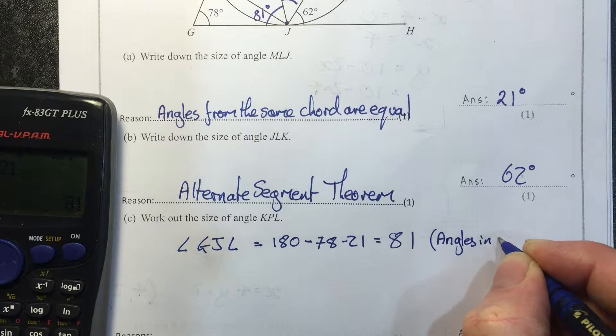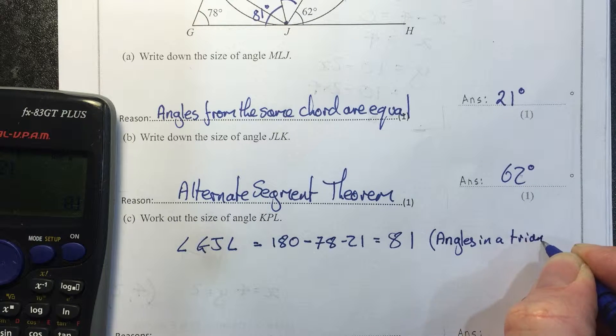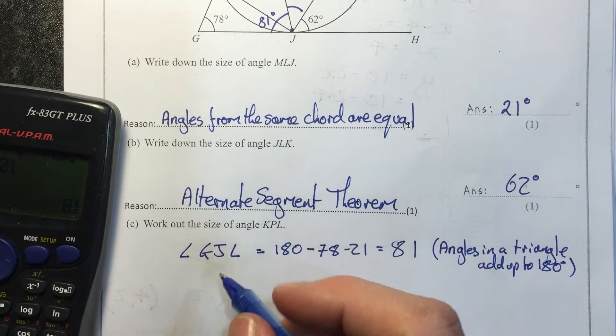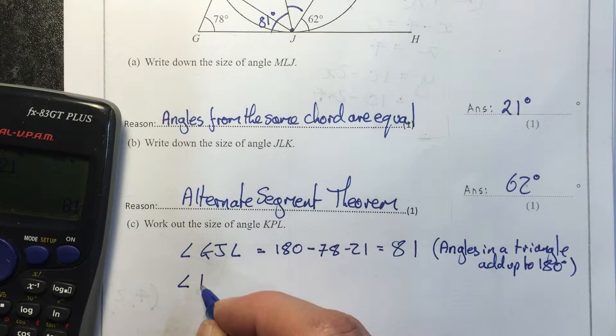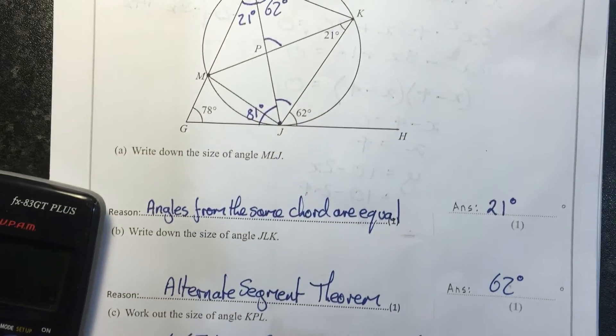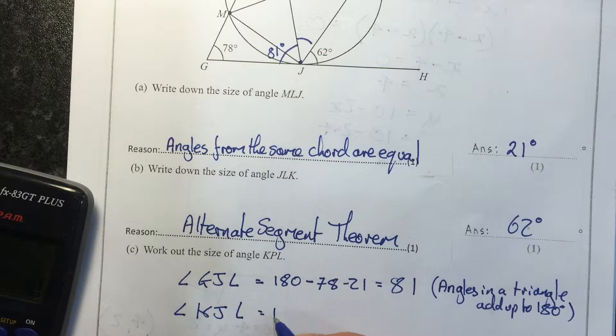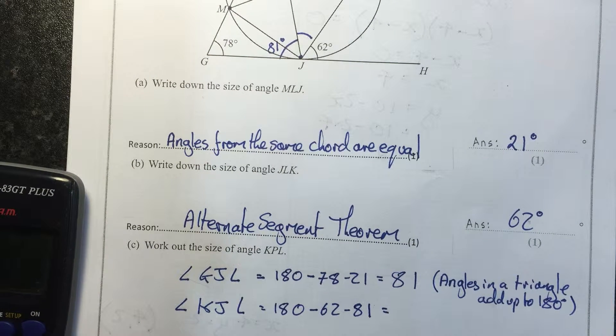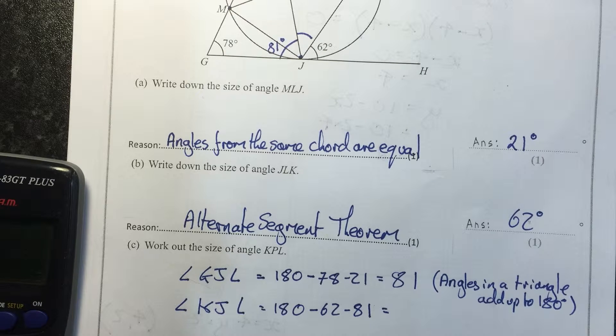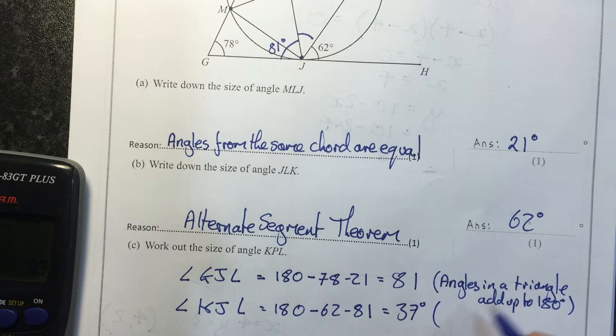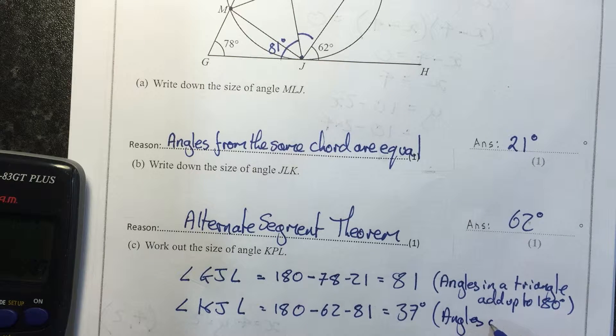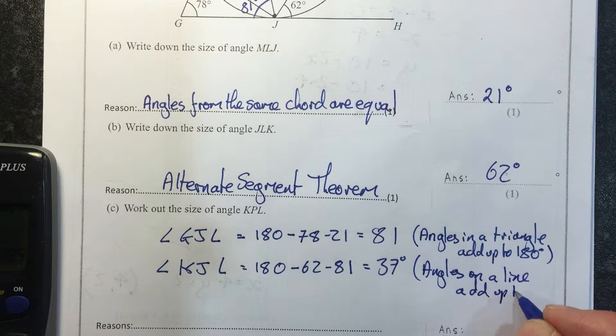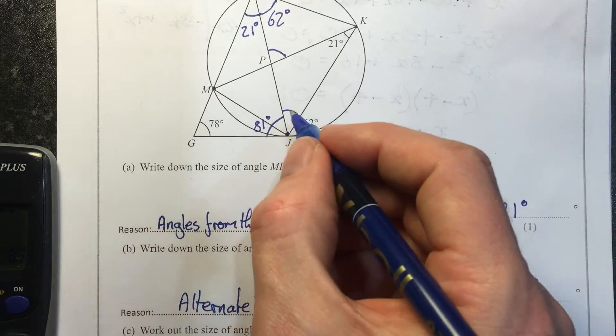Then we have angle KJL, so this one here is 180 minus 62 minus 81, is 37 degrees. And that's angles on a line up to 180 degrees, and there's 37.